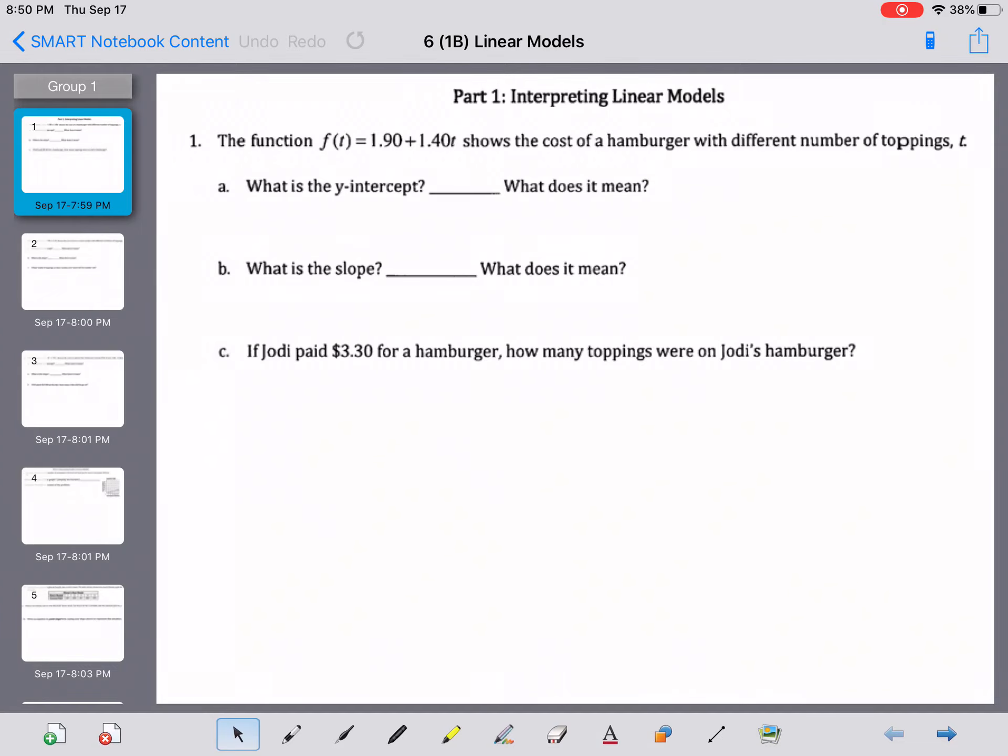We're going to talk about interpreting linear models here on the front page. The function f(t) = 1.90 + 1.40t shows the cost of a hamburger with different number of toppings t.